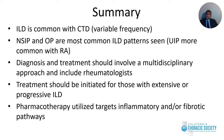In summary, ILD is common with connective tissue diseases but frequency varies by underlying CTD. NSIP and organizing pneumonia are the most common ILD patterns, though with rheumatoid arthritis, UIP pattern is more commonly seen. Diagnosis and treatment should involve a multidisciplinary approach including rheumatologists. Treatment should be initiated for extensive or progressive interstitial lung disease, and pharmacotherapy targets inflammatory and/or fibrotic pathways. Thank you for your time and attention.